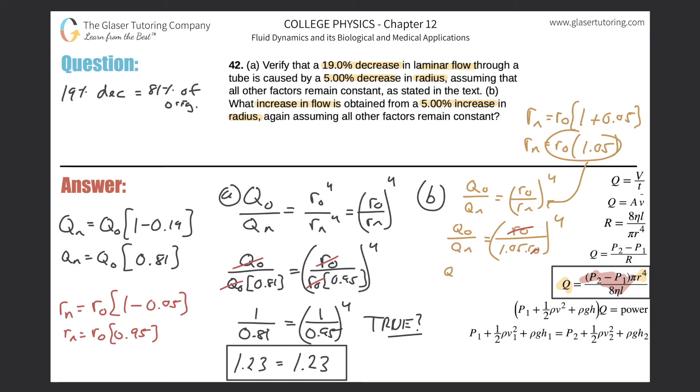Now I'm going to plug this value in for R_N. So it's Q_O over Q_N will be equal to R_O over 1.05 times R_O, all raised to the fourth power. So bye-bye R_O. We're left with Q_O over Q_N will be equal to 1 over 1.05, and this is going to be raised to the fourth power.